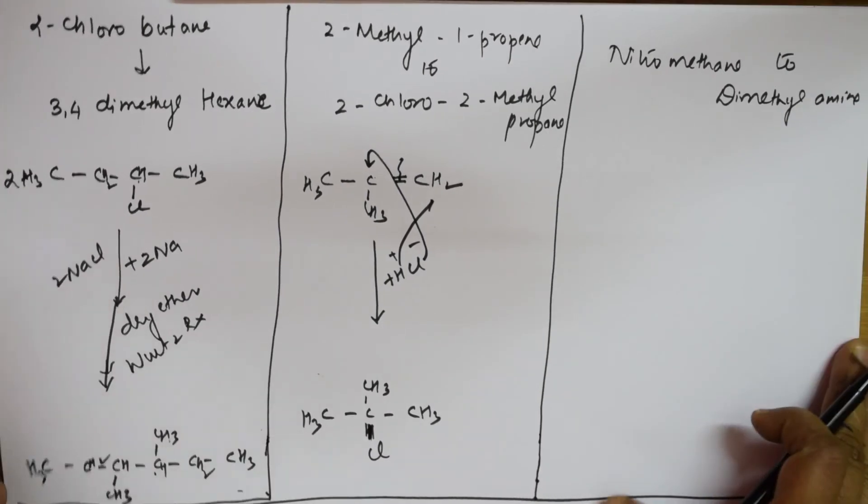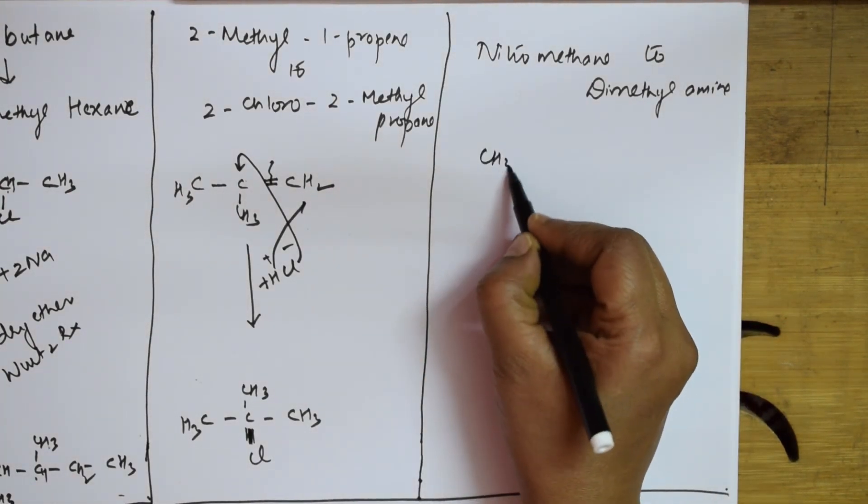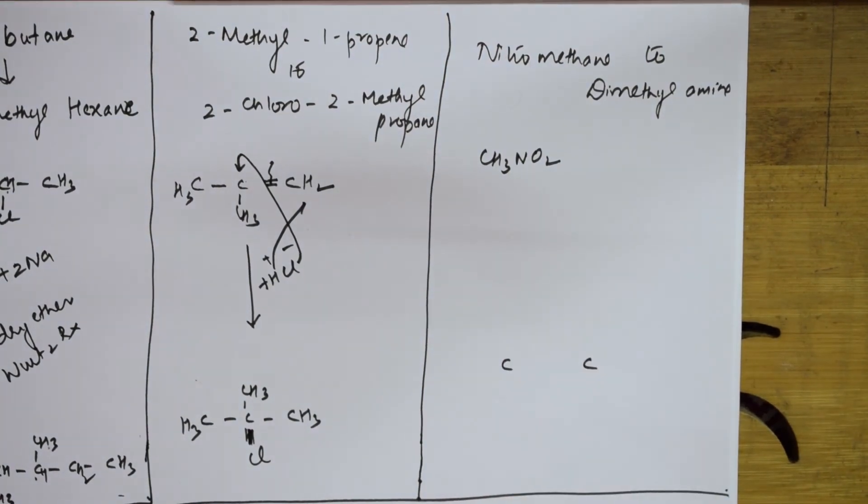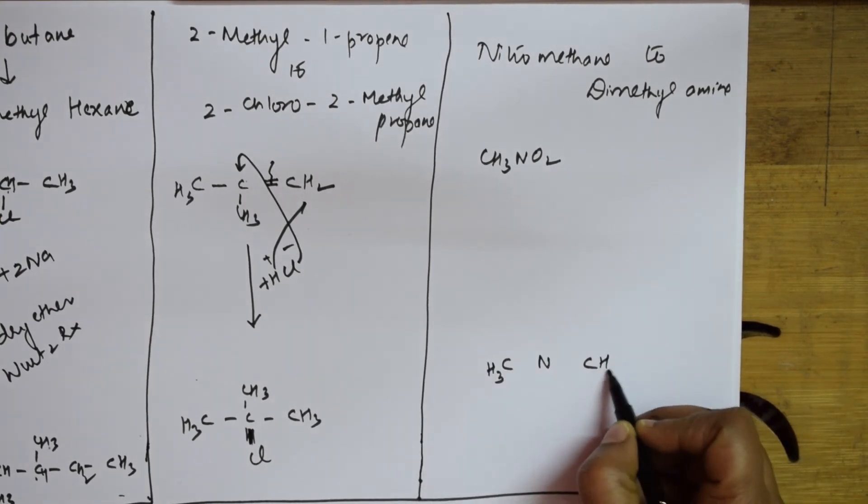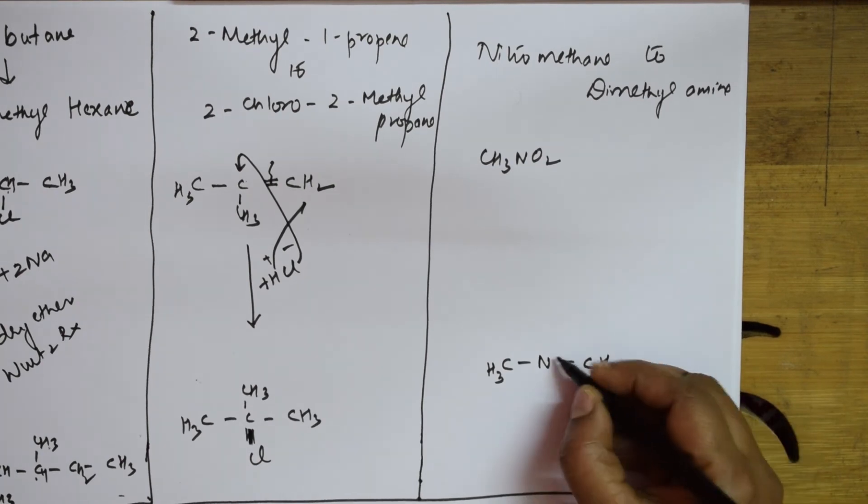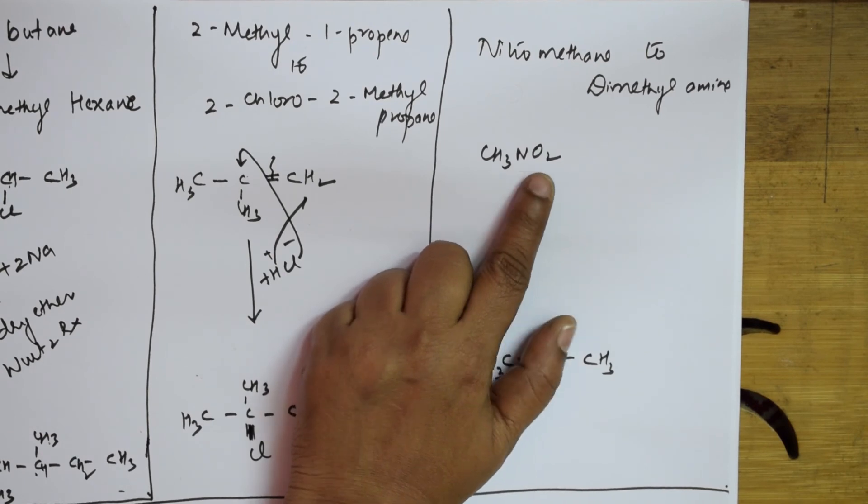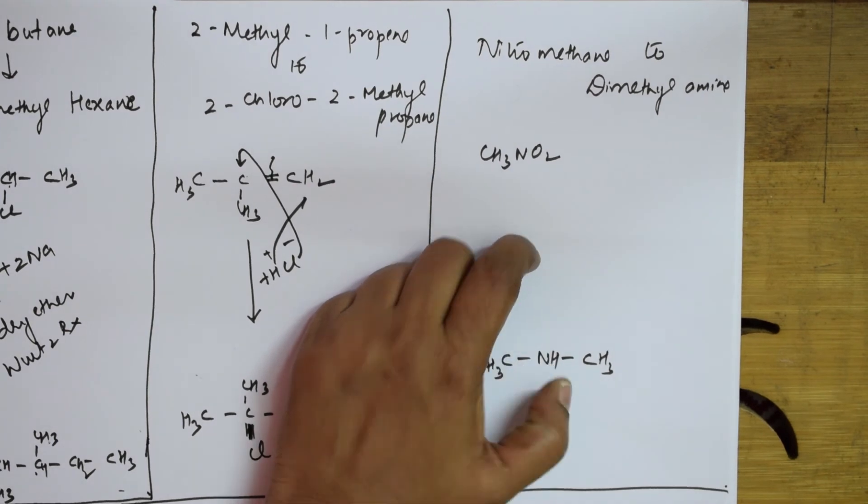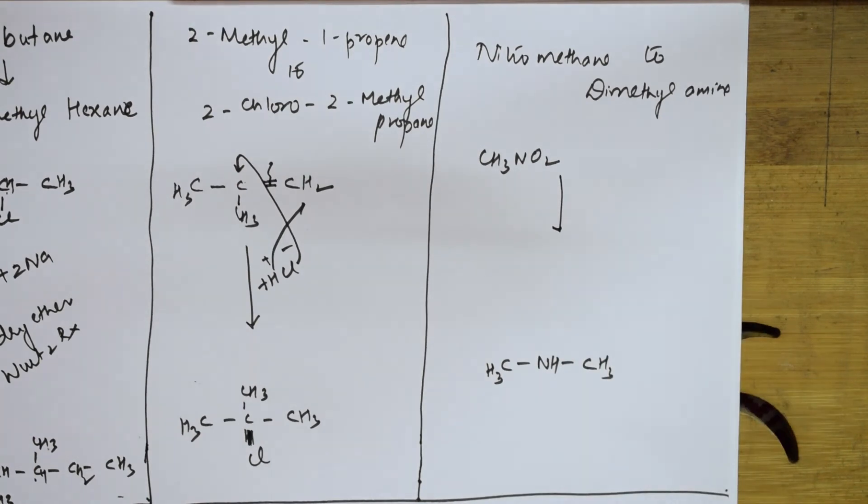Now, nitromethane to dimethylamine. Nitromethane: CH3-NO2. To dimethylamine - that means there are two carbon systems, two methyl groups. In the center there is amine. This is CH3-NH-CH3. This is NO2, so the nitro group gets converted to amines. Amines can be further converted.